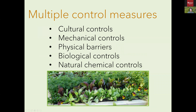The final pillar is the idea of using multiple control measures. The five different kinds of control measures we'll talk about are cultural controls, mechanical controls, physical barriers, biological controls, and natural chemical controls. The idea of using multiple control measures is in part to minimize the emphasis on any particular control measure, enhance the effectiveness of each by using them in combination, and ultimately to provide you with a toolkit to address different problems occurring in your garden simultaneously.